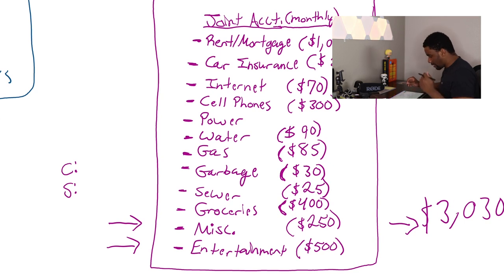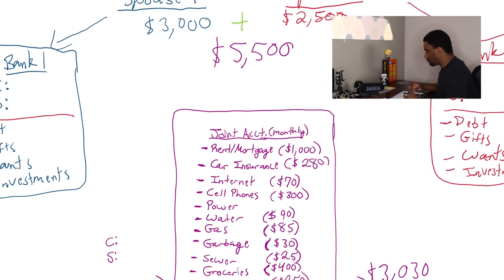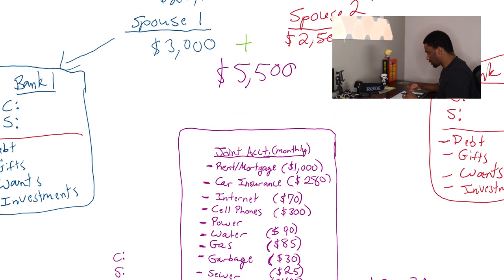And then we have entertainment. Entertainment is stuff like date nights, going out to amusement parks, going out to the movies, going out, you know, to eat, going out for drinks, going out to comedy clubs or whatever the case, whatever you guys do, that's what entertainment is. And it might look like it's high, but I will explain later in the video exactly why it's not as high as you think it is. It could be more.